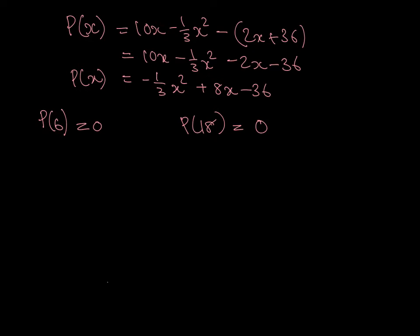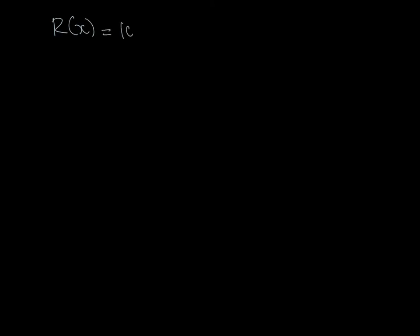So that's that. The next step is to sketch the graphs of the revenue and cost functions — remember I asked you to draw this. I'm going to do everything systematically. My revenue function is 10x minus 1/3 x squared.